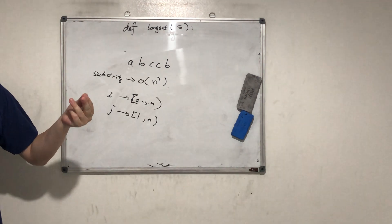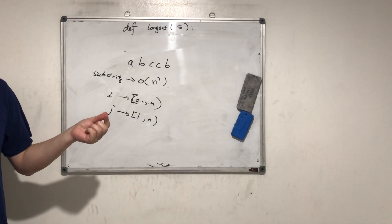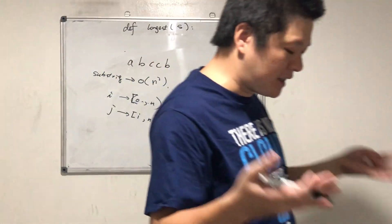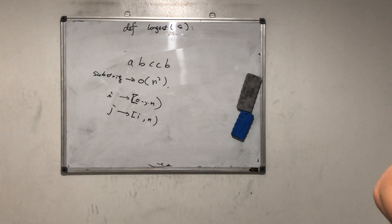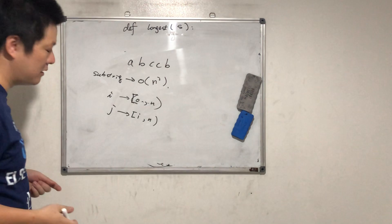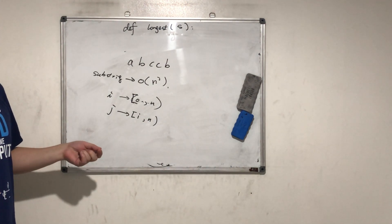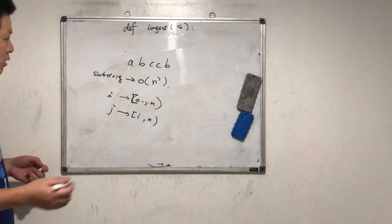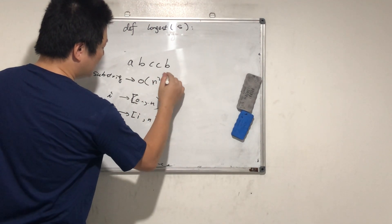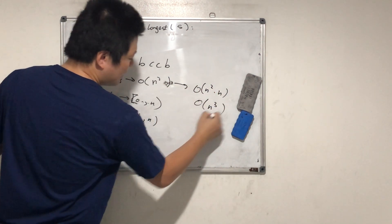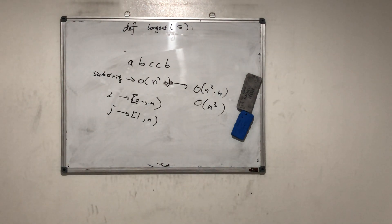And then to check if there are more than two distinct characters in each substring, we need O(N) time as well. So the total time complexity is O(N²) times O(N) — that will be O(N³). Got it?